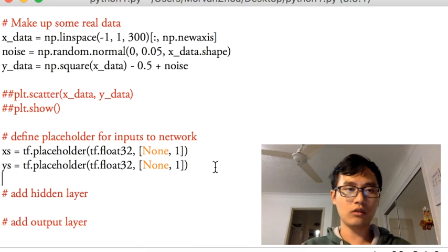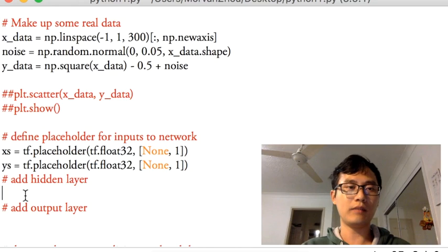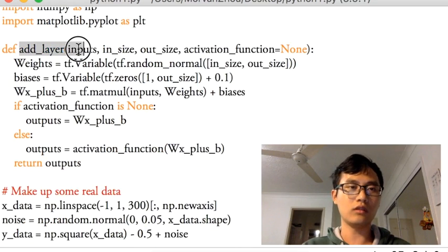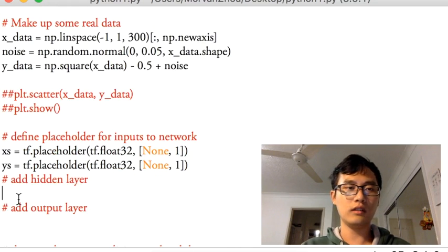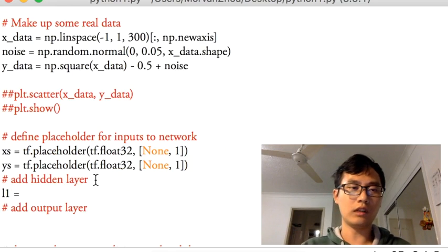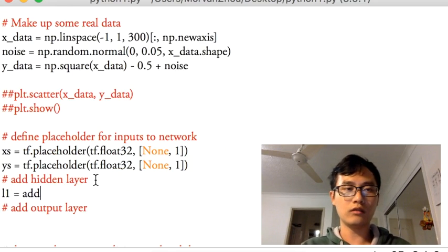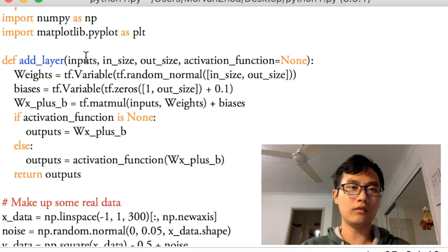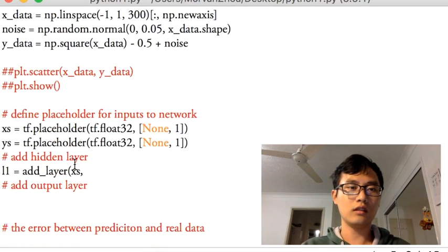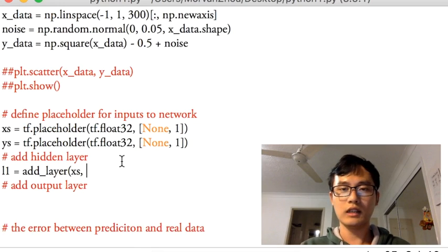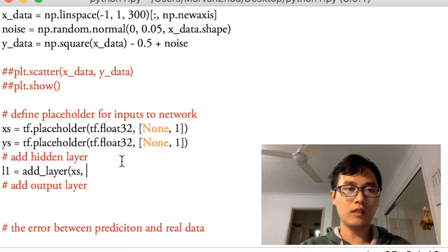So that's all, then we start to add a hidden layer by using this function. So that is to add the hidden layer one, or layer one is add_layer. In the input, if you still remember, the input is xs, because that is the actual input. And the input size is this one, we only have one feature for this sample.